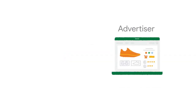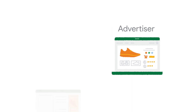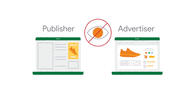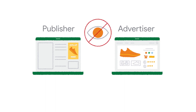In this example, the advertiser — the shoe store — doesn't learn what pages you're viewing, and the ad publisher — the news site — doesn't learn about your interest in running shoes.